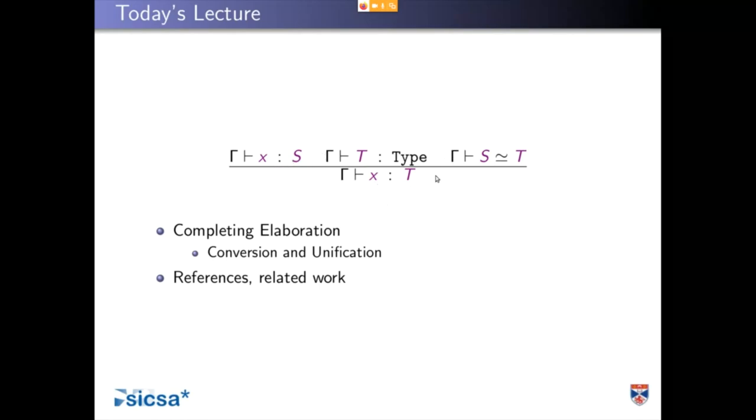So if you've got an X of type S, and S converts with T, then you can also have X of type T.